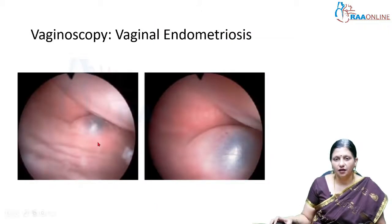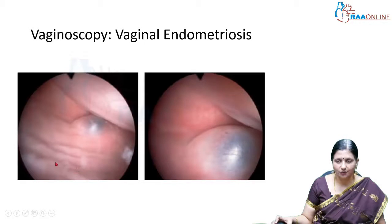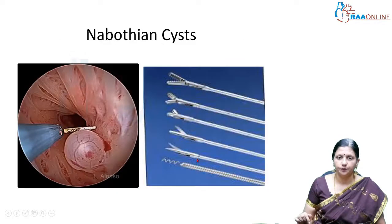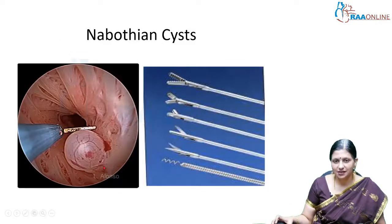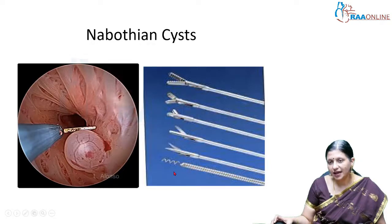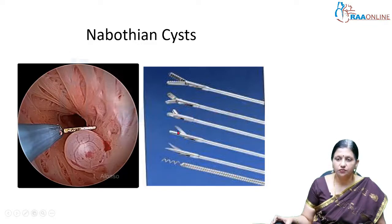During vaginoscopy, we have a fluid-filled vagina with normal saline and visualization of an endometriotic nodule in the vagina. As we enter into the cervix, we can see a Nabothian cyst. Various instruments can be used to operate on these lesions, including graspers, scissors, biopsy forceps, and myoma screws.